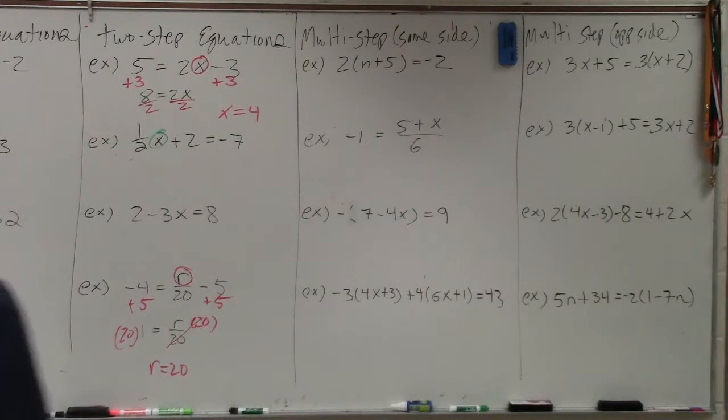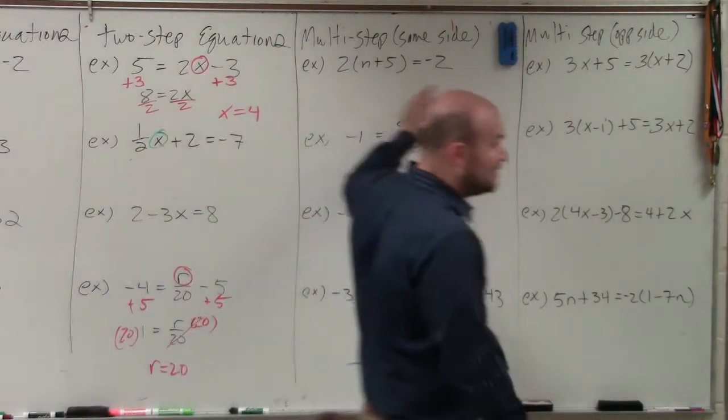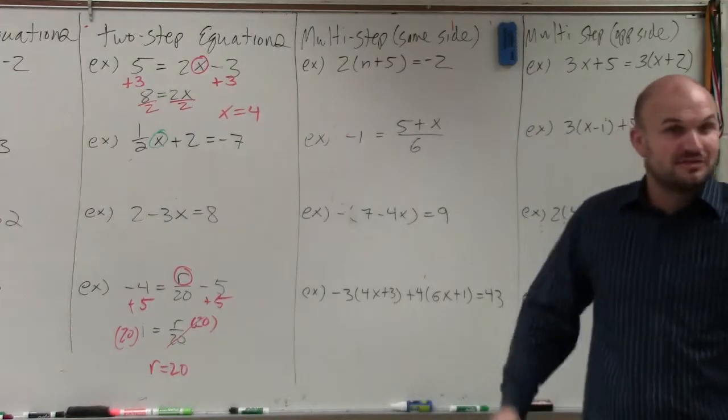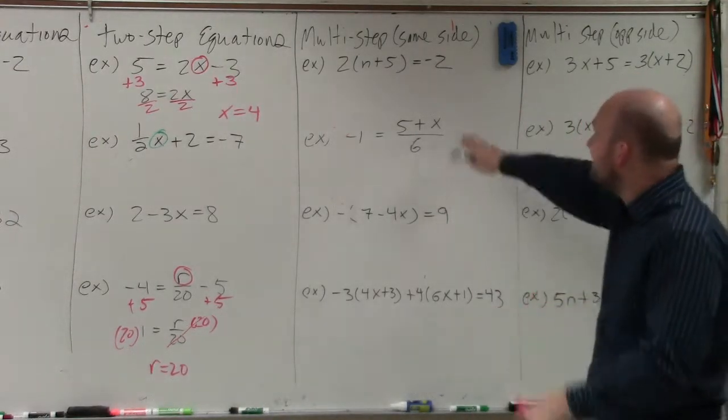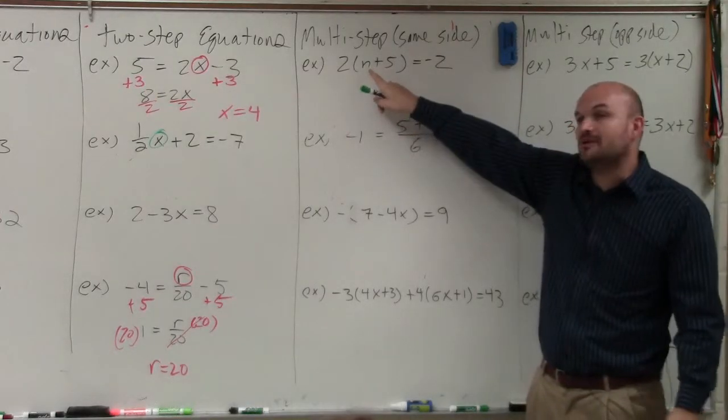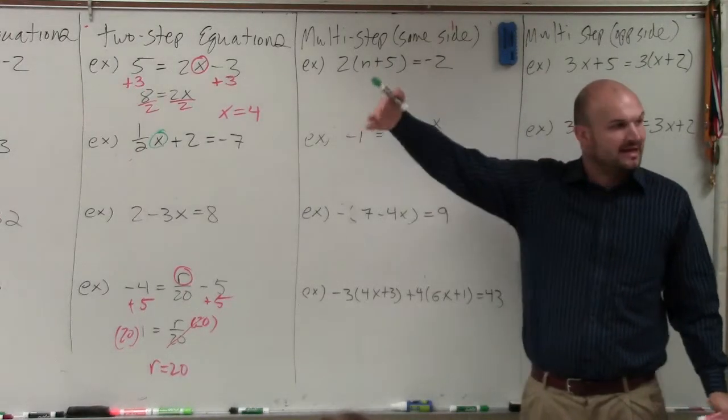On a multi-step same-side equation, we're going to get into step number one. Anytime you see parentheses with a quantity outside, think of using the distributive property. We have to simplify this. We can't isolate the variable until we have eliminated all parentheses.